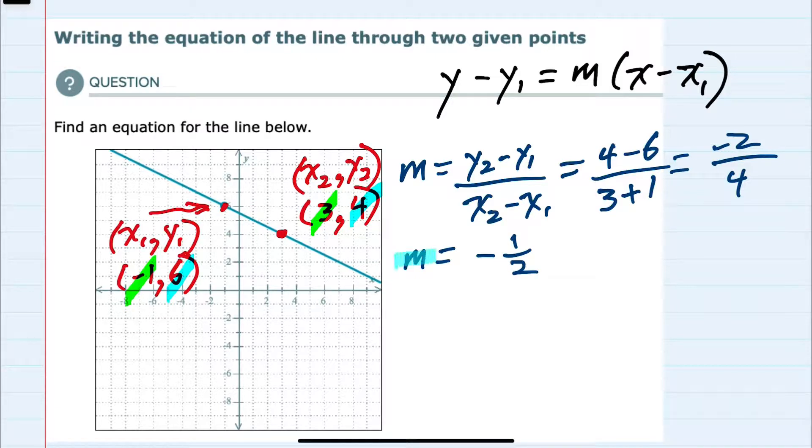And now that we have our slope to plug in, we could use either of the points for x1 and y1 to plug in, but since I've already identified one here, I'll use this point as our x1 and y1. So doing the substitution,